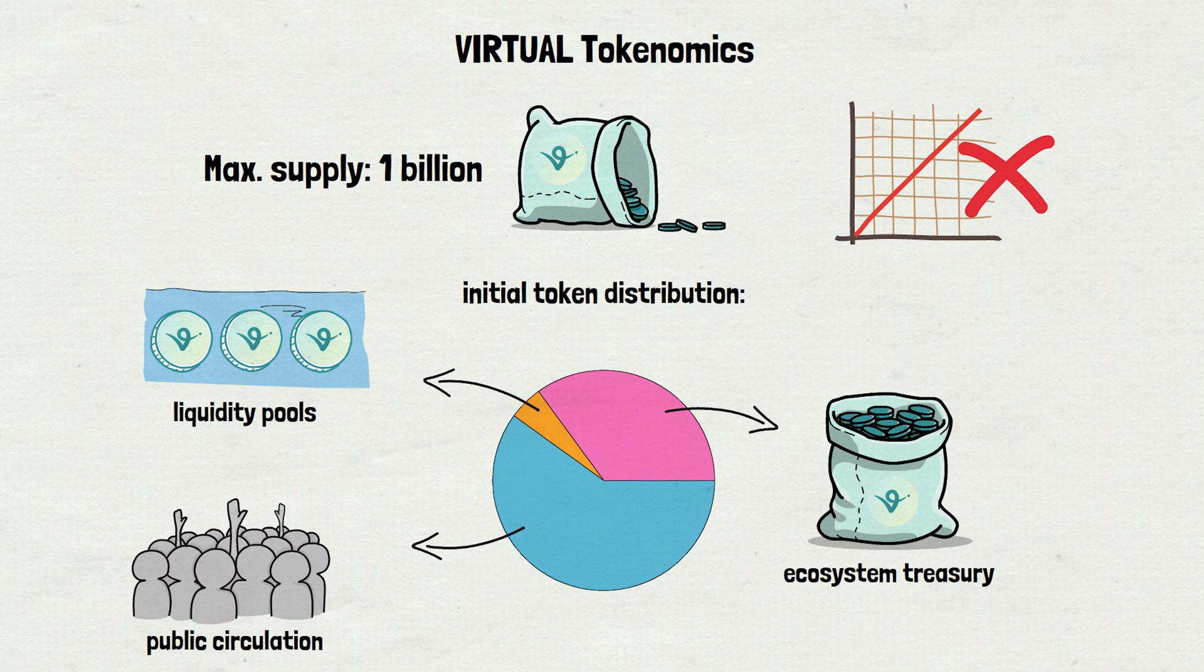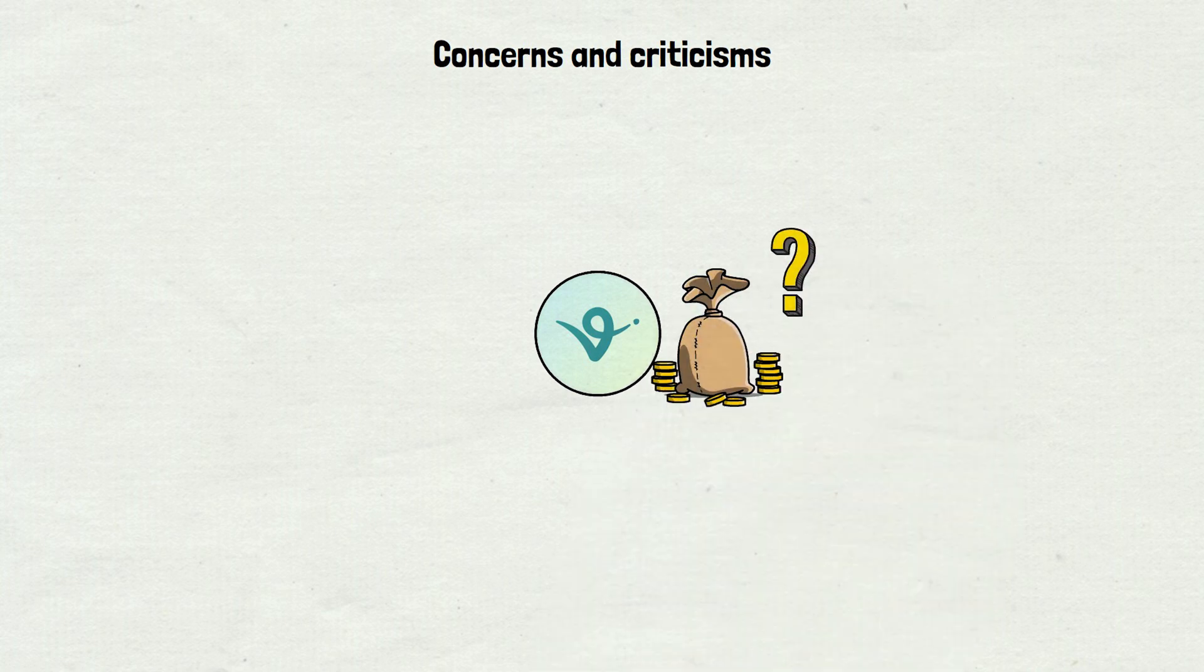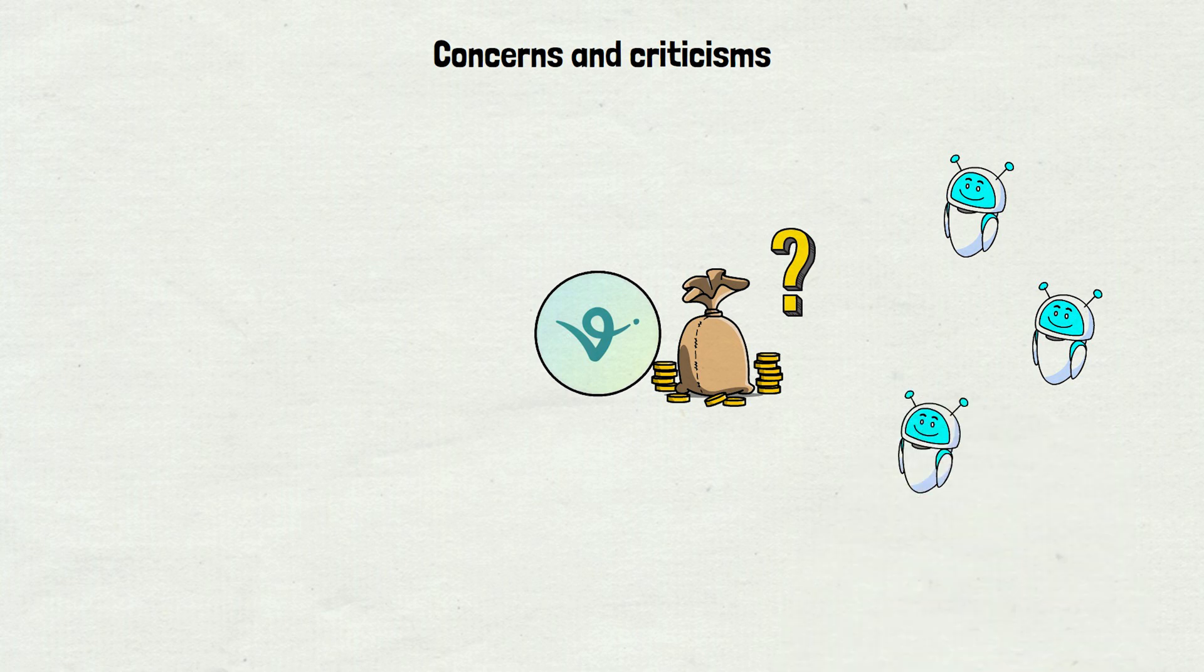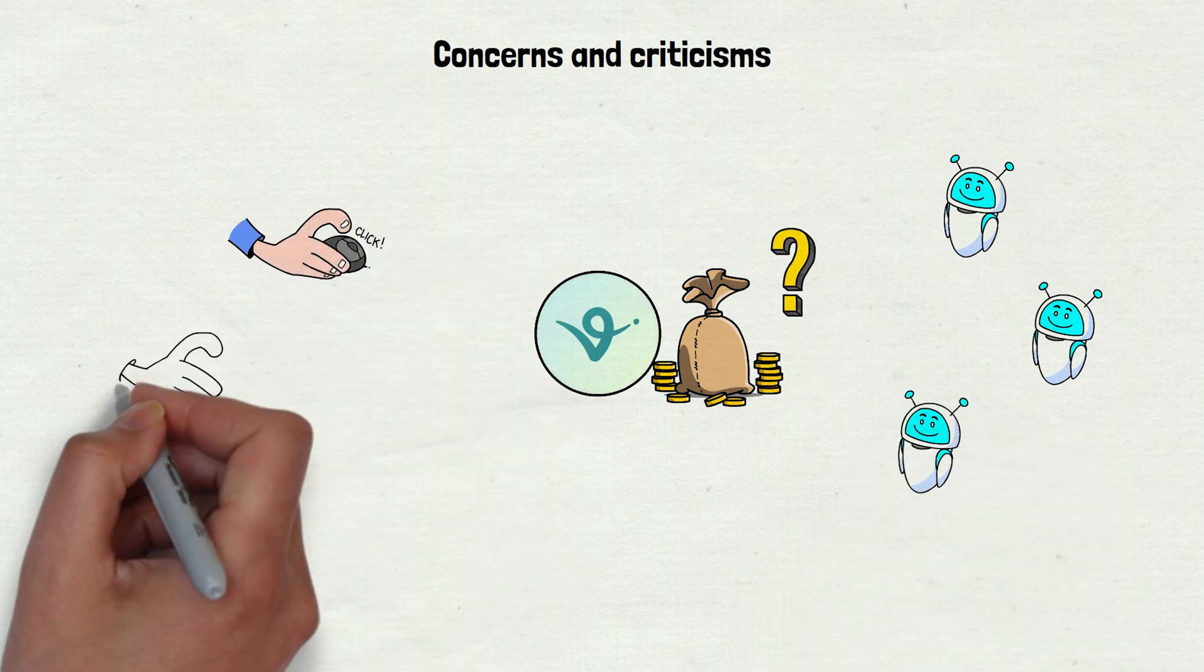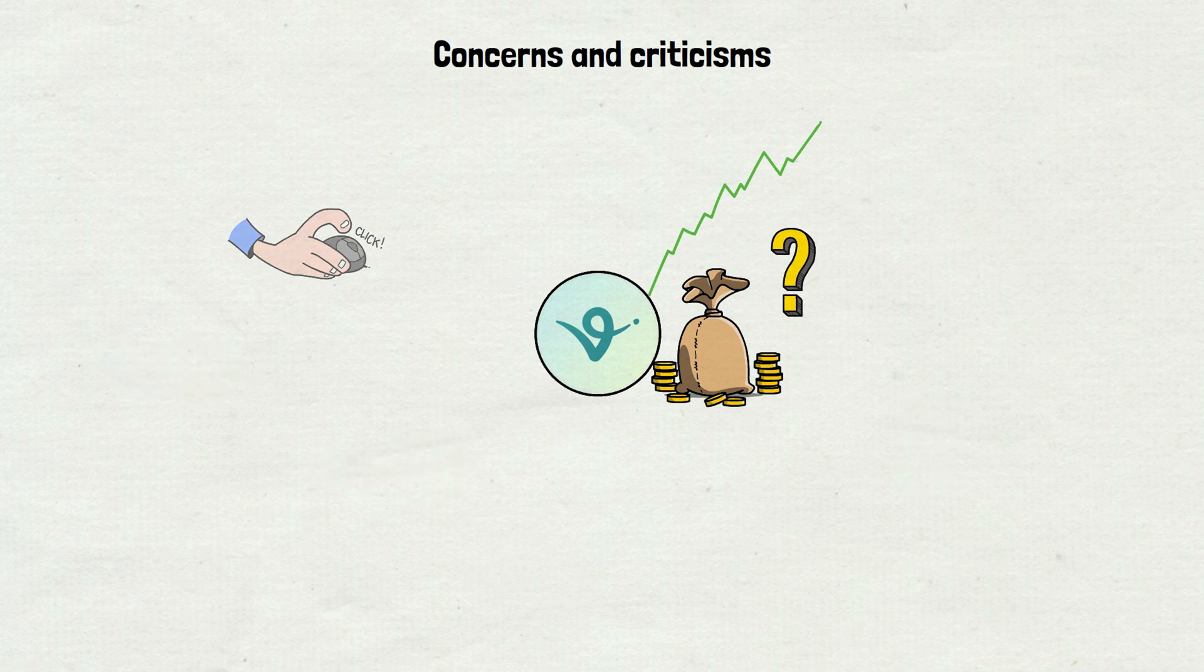Alright, let's now look at some concerns and criticisms of VIRTUALS protocol. First up, how are these things supposed to make money? The plan's pretty straightforward: grow the network, more AI agents doing cool stuff, more people jumping in, and more demand for VIRTUAL tokens. Sounds good, I get it. But here's the catch: what if those AI agents aren't actually useful? Or what if nobody shows up to use them?